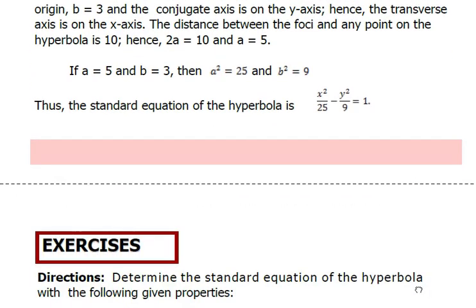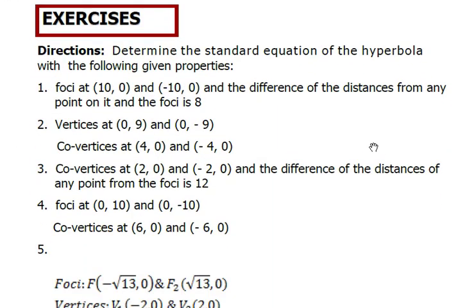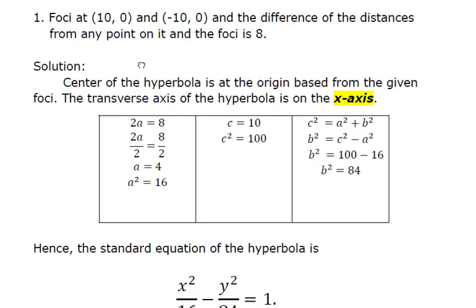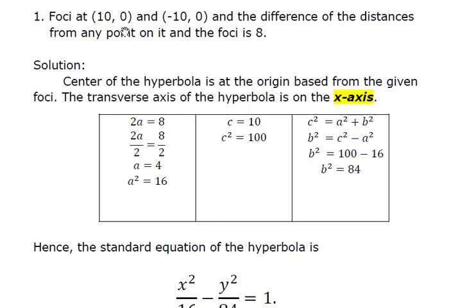Let me go over the exercises — we have five numbers to solve. The direction says: determine the standard equation of the hyperbola with the following given properties. Exercise number 1: foci at (10, 0) and (-10, 0), and the difference of the distances from any point on it to the foci is 8. Since the foci are given, we can find c. C equals 10, so c-squared equals 100. The difference of the distances is 8, so we set 2a equals 8, giving a equals 4 and a-squared equals 16.